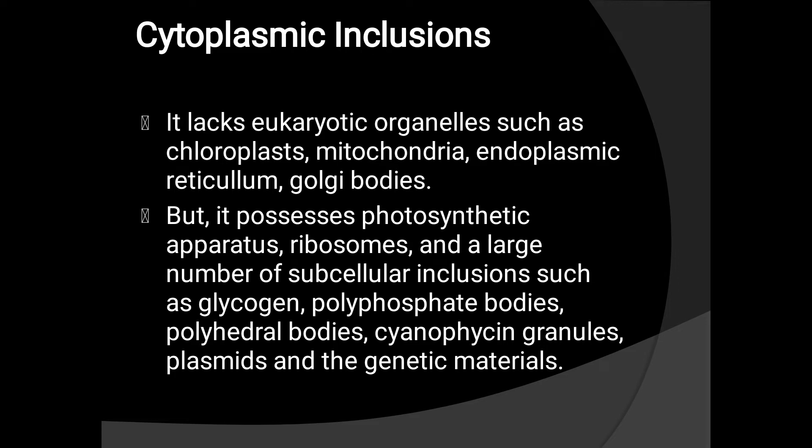Cytoplasmic inclusion. The prokaryotic cell lacks the eukaryotic organelles such as chloroplasts, mitochondria, endoplasmic reticulum, and Golgi bodies, but it possesses photosynthetic apparatus, ribosomes, and a large number of subcellular inclusions such as glycogen phosphate bodies, polyhedral bodies, cyanophycin granules, plasmid, and genetic materials.